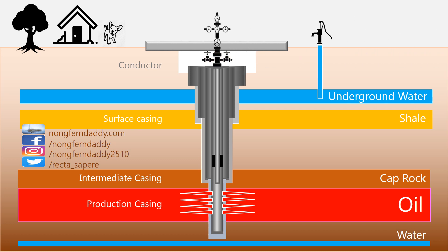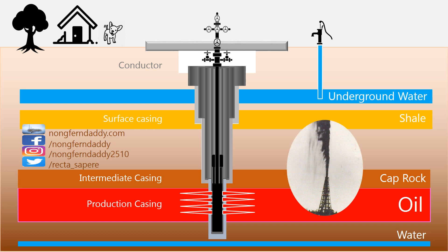We bring a set of surface valves in. We call it the Christmas tree. Now everything is in place for hydrocarbon to come in. The last step is to reduce the weight of completion fluid in the well so that it is less than the formation pressure, to allow hydrocarbon to flow into the well. Technically, we call this process unloading the well. There are several techniques to unload the well, but we will not explain here. Once we unload it, the hydrocarbon will flow in. That is it — that is how we drill and produce oil.